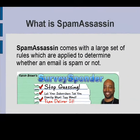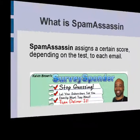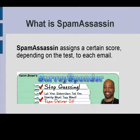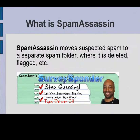SpamAssassin comes with a large set of rules which are applied to determine whether an email is spam or not. Specific fields within the email header and body are searched for certain regular expressions, and if these expressions match, the email is assigned a score depending on the test, and several headers are added to the email. The total score from all tests can then be used by the end user or ISP to set conditions under which email is moved to a spam folder, deleted, flagged, etc.